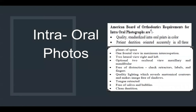The ABO guidelines state your pictures should be quality standardized and should be colored. The patient's dentition should be oriented accurately in all three planes of space: one frontal view in maximum intercuspation, two lateral views — right and left — optional, and two occlusal views of the maxilla and mandible. They should be free of distraction — no retractors, labels, or fingers visible in the picture. The lighting should reveal anatomical contours and make the image free of shadows. The tongue should be retracted when taking the lower mandibular occlusal. The pictures should be free of saliva and bubbles, and the dentition needs to be cleaned. Always do scaling and polishing first, then take the patient records.